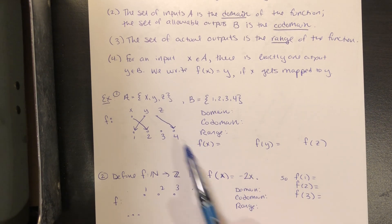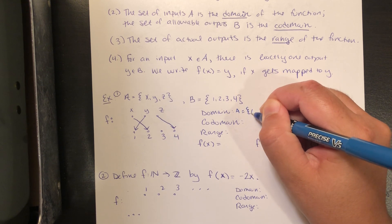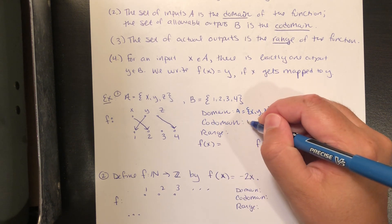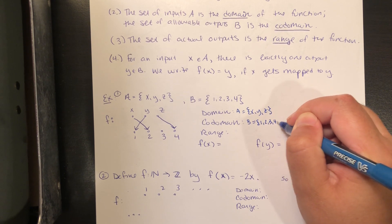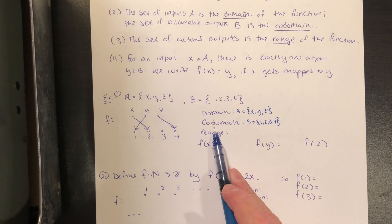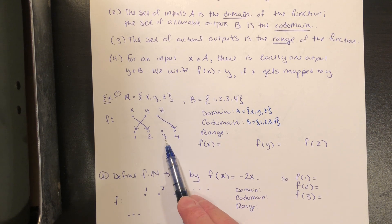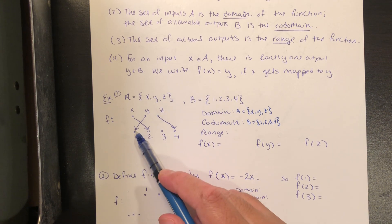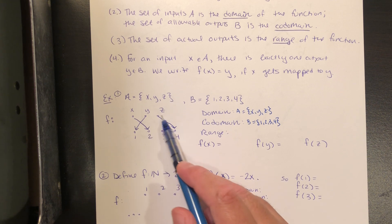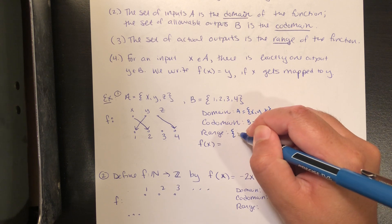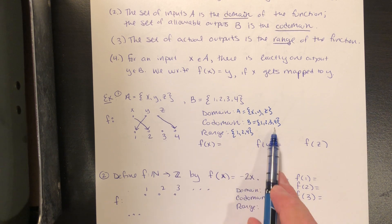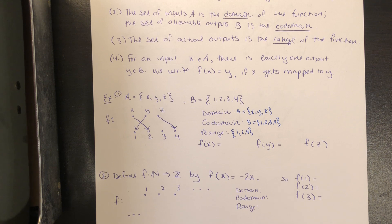This is a perfectly good function. The domain is the set containing X, Y, and Z, and the co-domain is the allowable outputs 1, 2, 3, and 4. Notice not all of the possible outputs ended up being outputs of the function — they didn't all get used. So the range is the set of actual outputs: 1 is in the range because it's the output of Y, 2 because it's the output of X, and 4 because it's the output of Z. So the range is just 1, 2, and 4. The range is always going to be a subset of the co-domain, but it might not be equal to it.